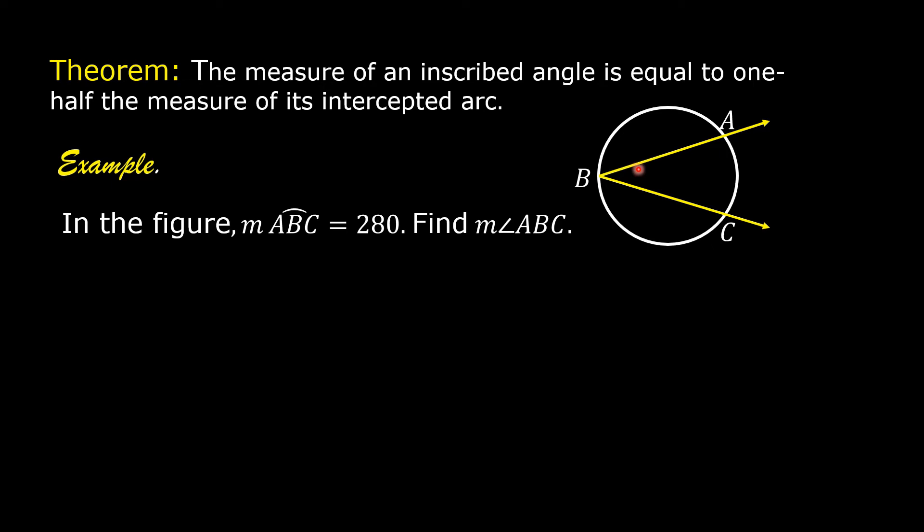The measure of arc AC can be determined by subtracting the measure of arc ABC from 360 degrees, because a circle contains 360 degrees. So the measure of arc AC is equal to 360 minus 280. And therefore, the measure of arc AC is equal to 80.